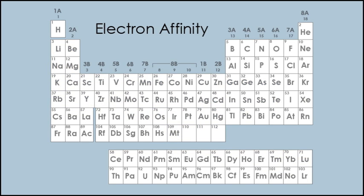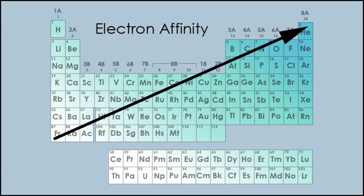Electron affinity is the energy gained by an atom when it gains an electron to form an anion. Another way to think of this is the energy required to remove an electron from a singly charged anion. Atoms with fewer protons have higher electron affinity. The trend can be observed that electron affinity increases up and to the right on the periodic table.